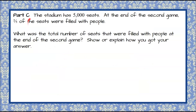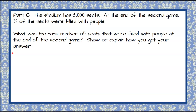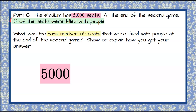Moving on to Part C. The stadium has 5,000 seats. At the end of the second game, two-fifths of the seats were filled with people. What was the total number of seats filled at the end of the second game? Please pause, do your best work, and come back to see mine. Welcome back. We're told that our stadium has 5,000 seats. Two-fifths of the seats were filled, so we want to find two-fifths of 5,000. I'm going to do this more visually — two-fifths means we want two of five parts.